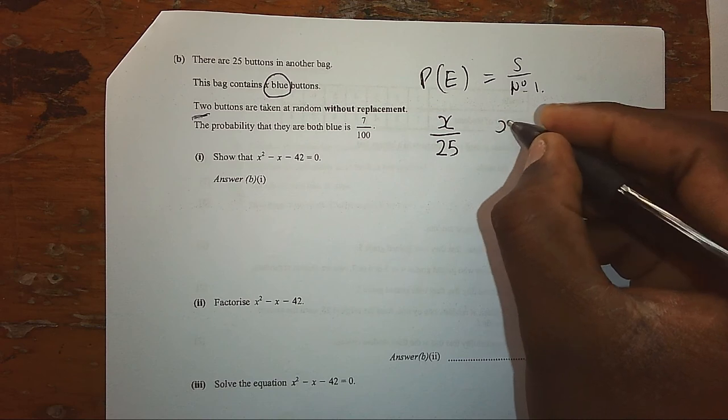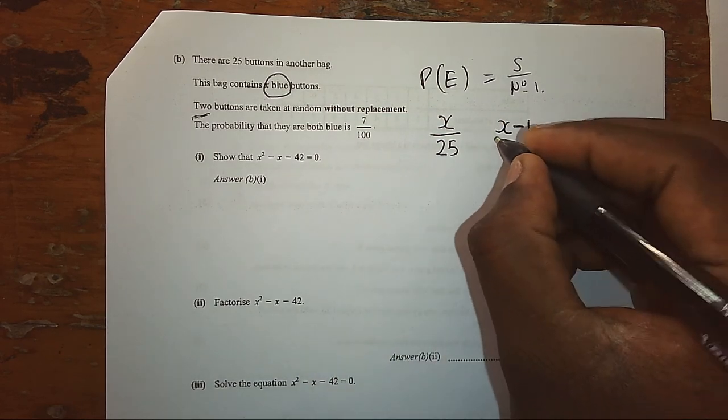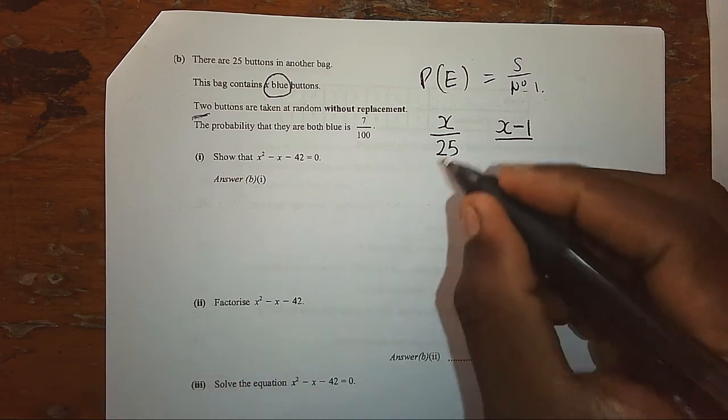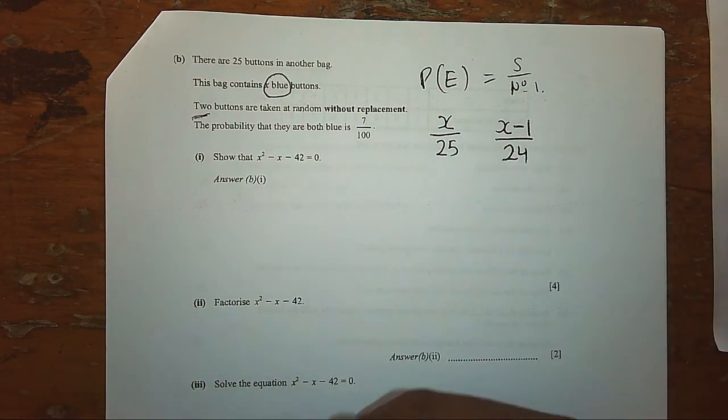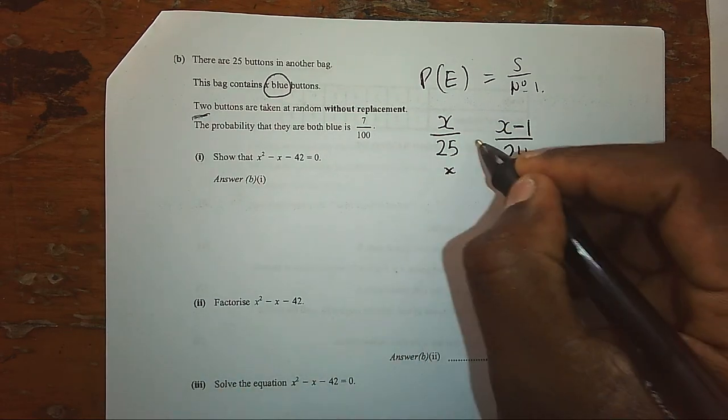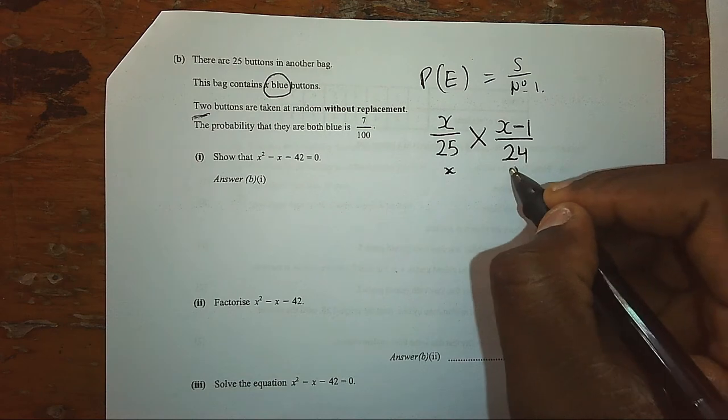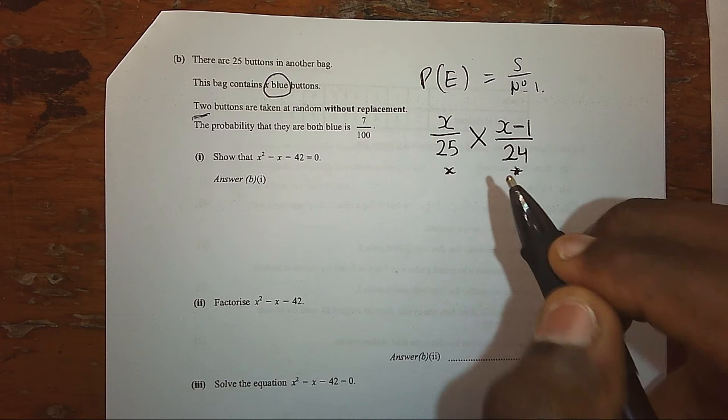In my second picking, I will have X minus one button, and because I picked the first button, the 25 number of buttons now reduces by one as well. Therefore, picking the first button and picking the second button could be the probability for picking two blue buttons.